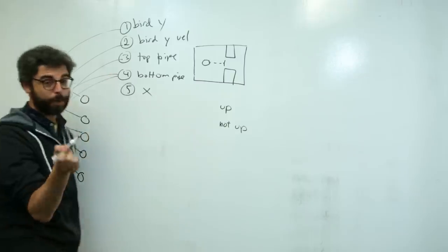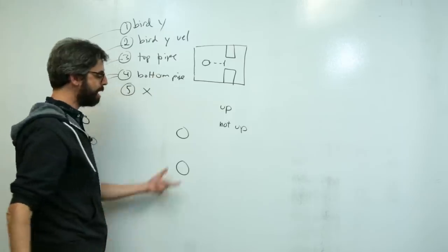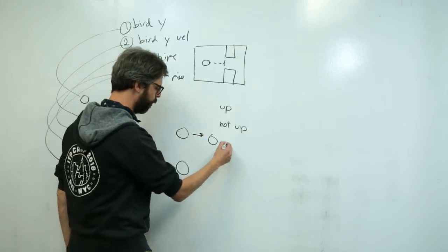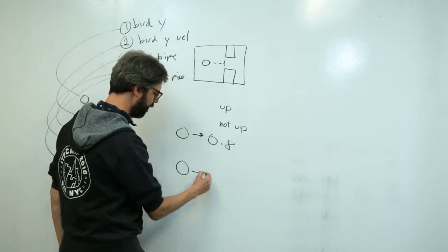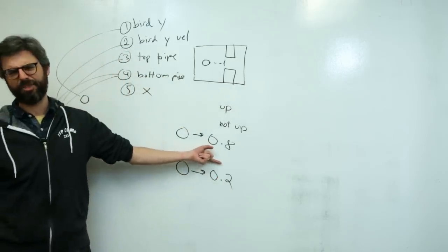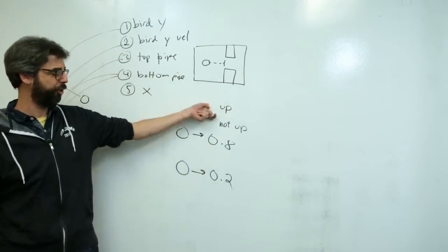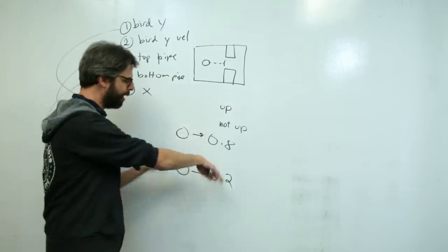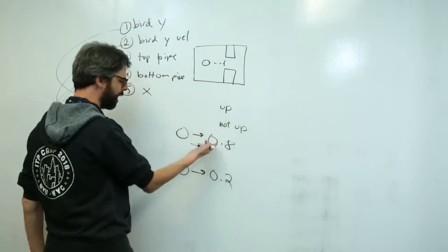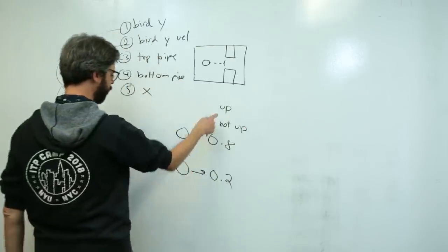The output is a classification problem with just two outputs. They would each output a number — for example 0.8 and 0.2, meaning roughly an 80% confidence score that I should jump. I could pick randomly, but I'm just going to take the arg max and go with the highest one.